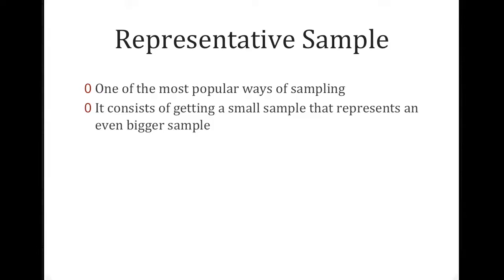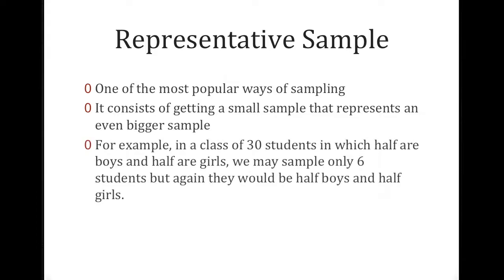This is where it comes to representative sample, which is very important. The word is representative. So this is one of the most popular ways of sampling. And it consists of getting a small sample that actually represents an even bigger sample. So, for example, in a class of 30 students in which half are boys and half are girls, we may only want six students, but we would need to make sure that three of those are boys and three of those are girls because in the actual class, half are girls and half are boys. So we kind of want to represent everybody equally, but in a smaller sample.